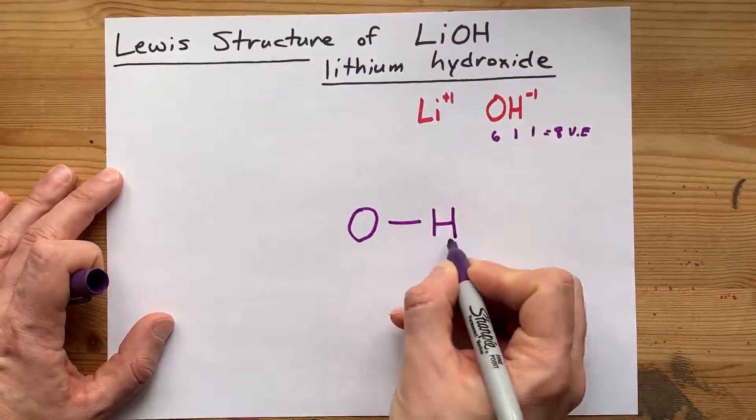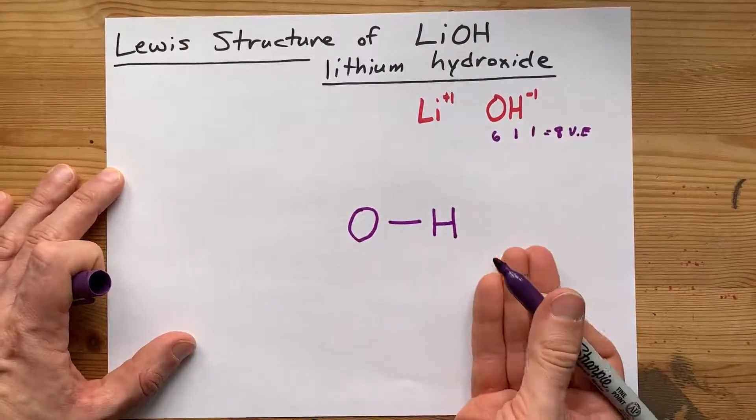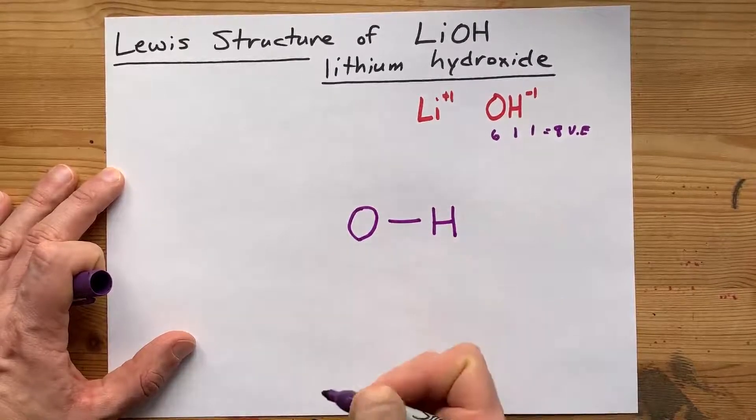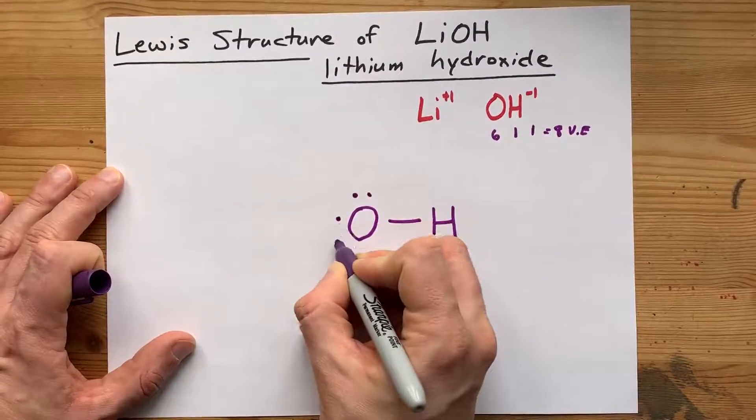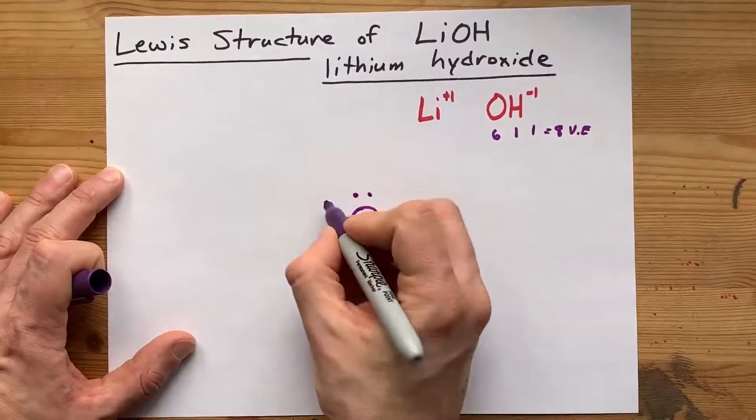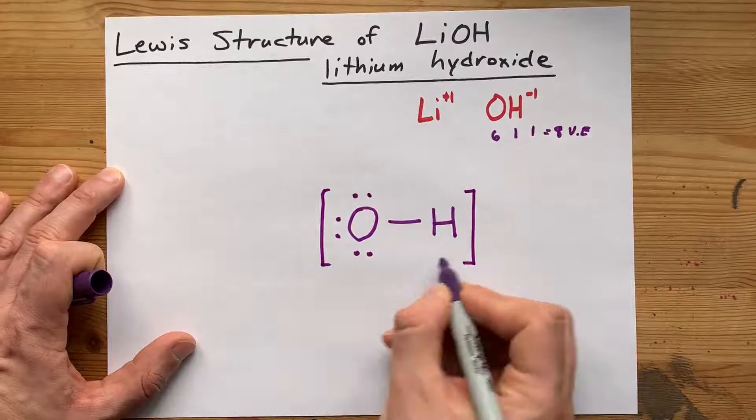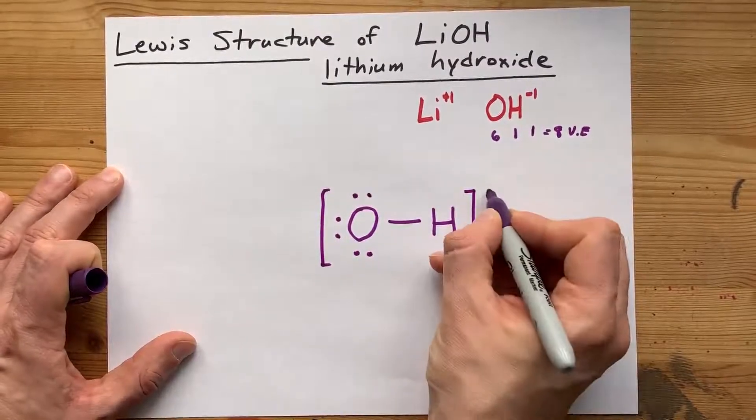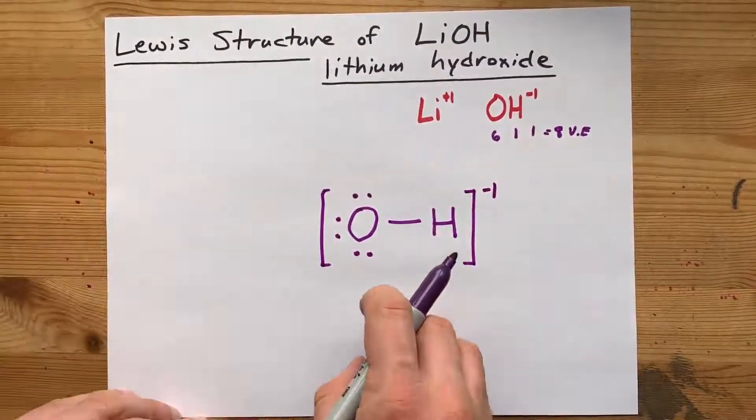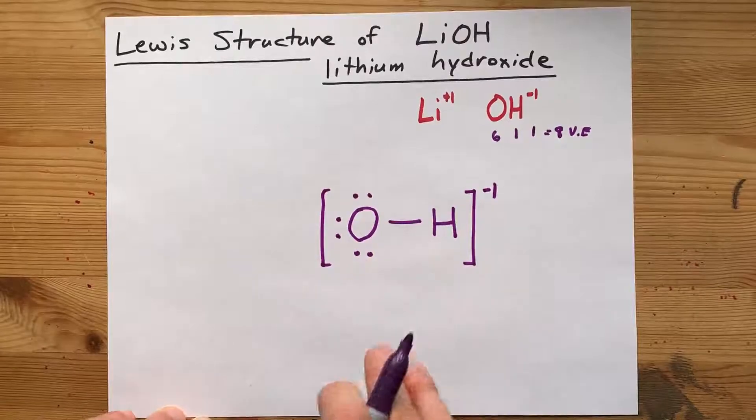Hydrogen doesn't need a full octet. It's one of the exceptions. It's happy with this single bond. So oxygen gets those extra electrons. Now oxygen has a full octet, which it does need, and this particle is stable. This is the Lewis structure for the hydroxide ion.